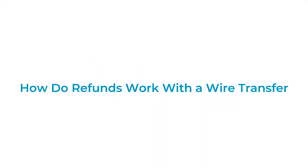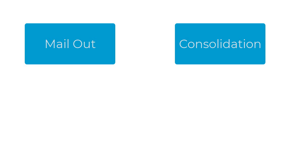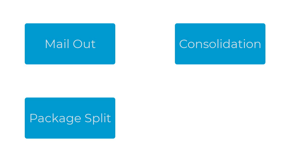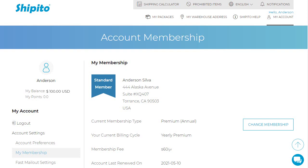How do refunds work with wire transfer? When you make a payment with a wire transfer for a service such as a mail out, consolidation, package split, or assisted purchase, and the service gets cancelled, you will receive a credit in your Ship It To account.